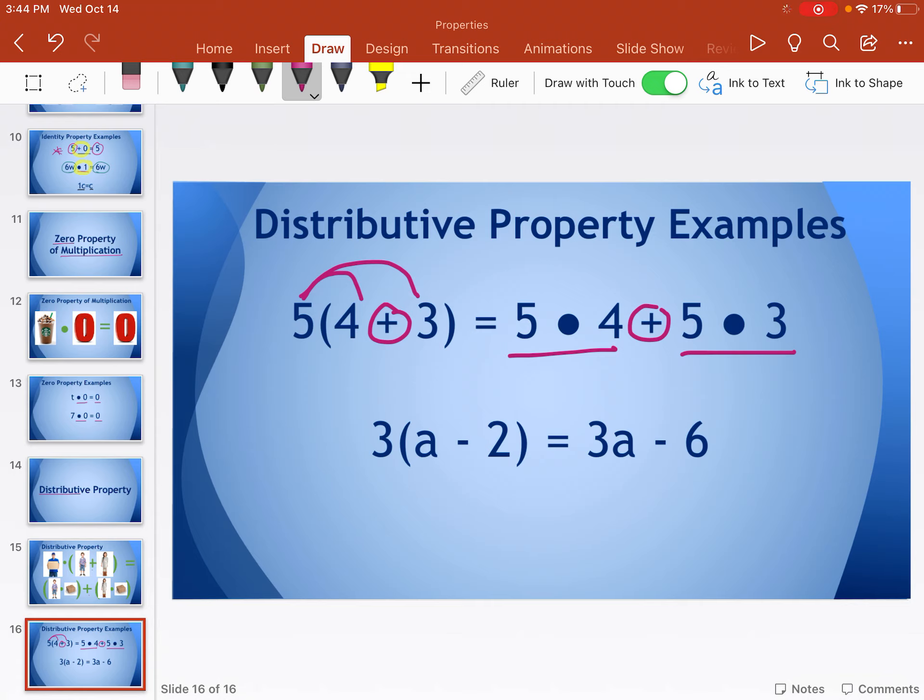The second example, they did kind of the same thing, but they actually went ahead and multiplied and that's okay. So three times a is three a minus three times two, which is six. So sometimes they're going to write it in the problem form like the first one. Sometimes they can go ahead and simplify it and do that multiplication like the second one. And those are all of your examples.